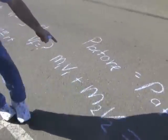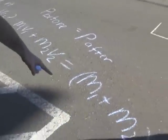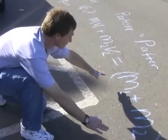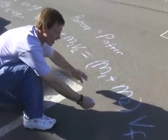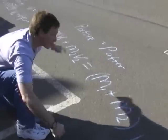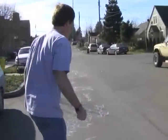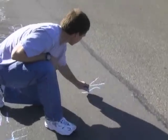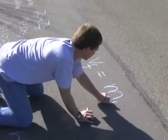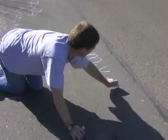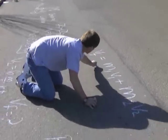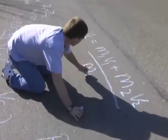I know M1, I know V1, I know M2, I know V2 — I know all these. The only thing I don't know is that final velocity. So what I'm going to do is divide both sides by M1 plus M2 — that quantity in the parentheses — and I'll get the final velocity all by itself. So I'll wind up with the final velocity equal to M1V1 plus M2V2 over M1 plus M2.